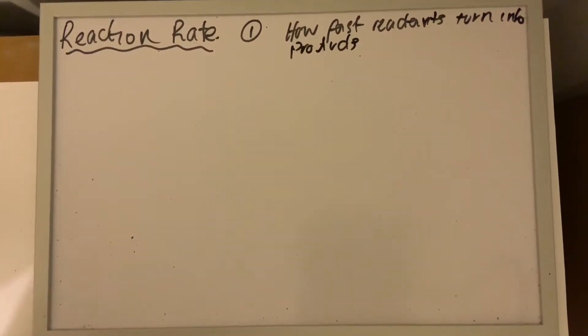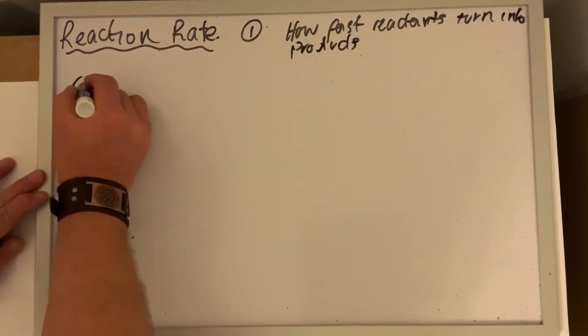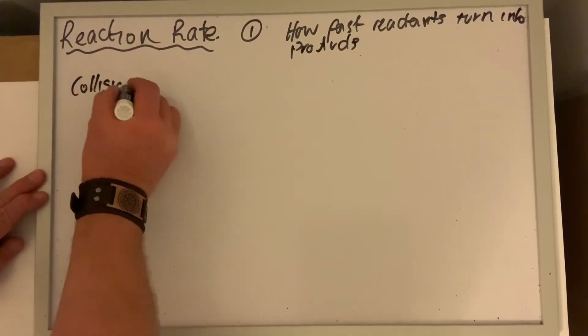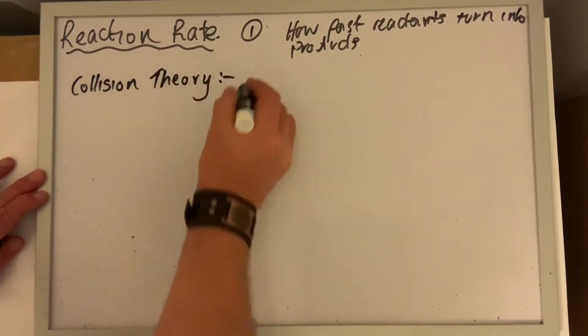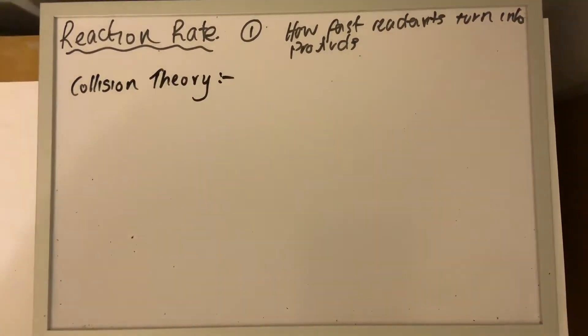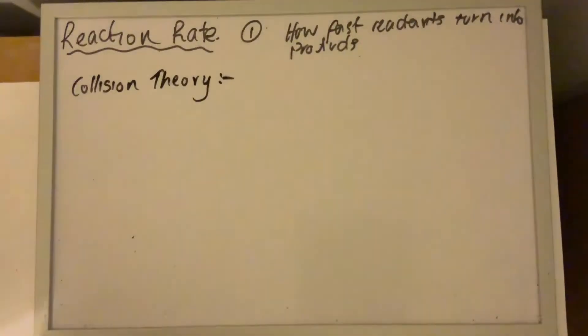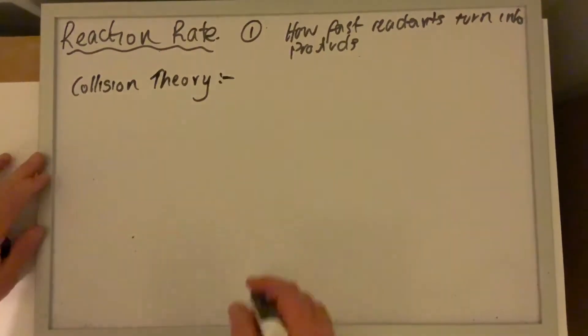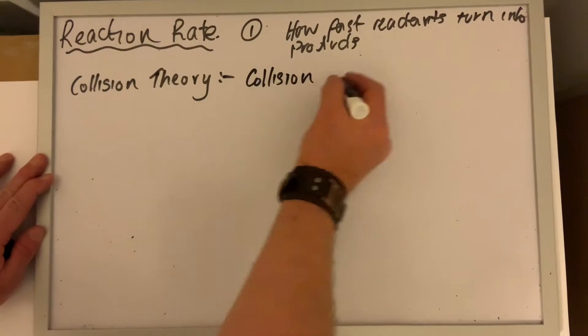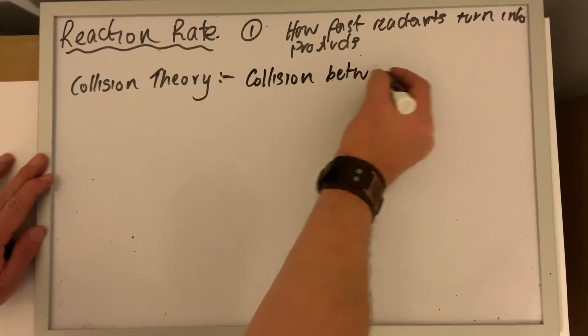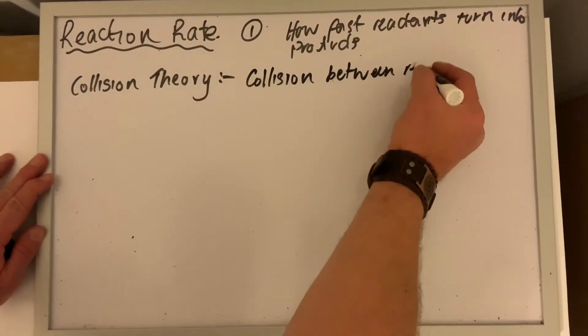This is down to what's called collision theory. To put it simply, the more collisions between the reactant particles, the faster the products form. Collision theory requires collisions between reactants.